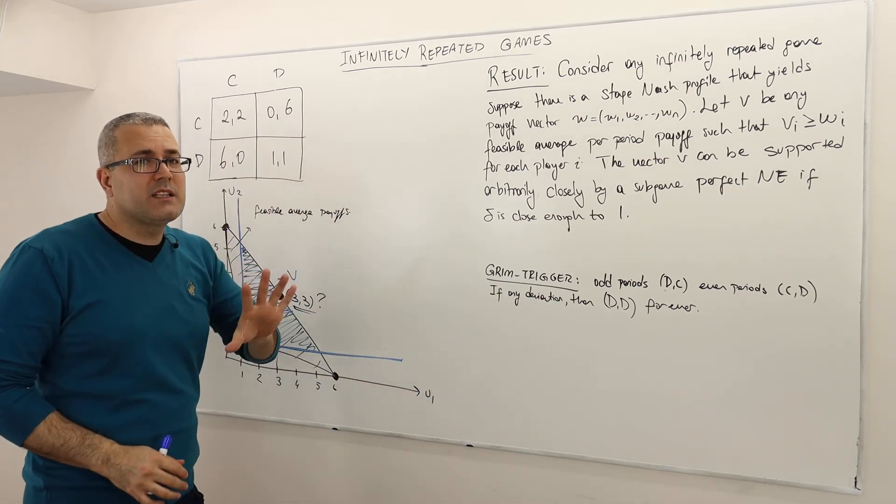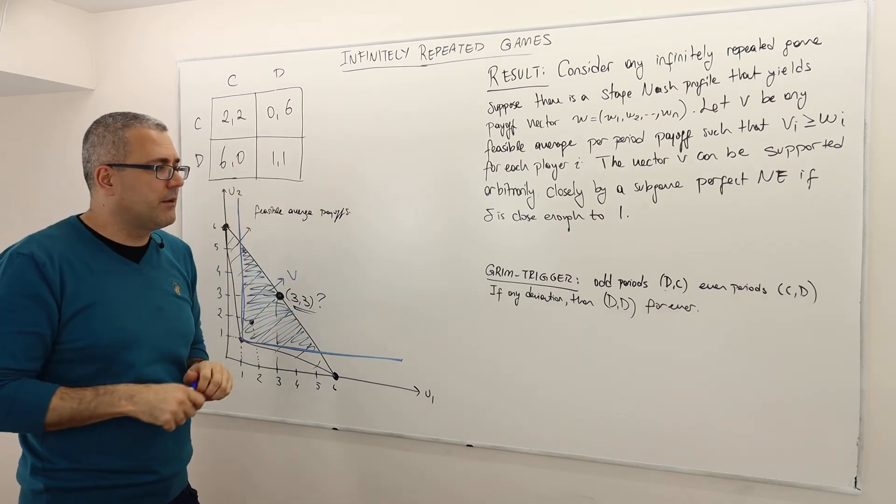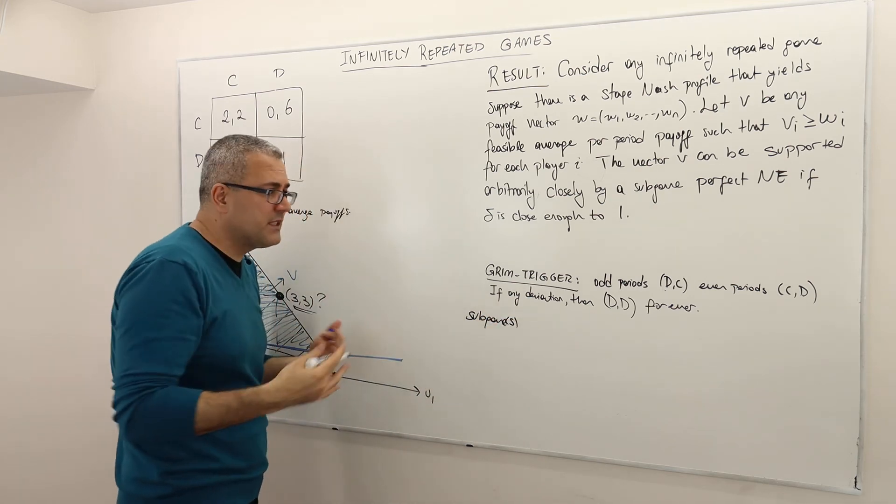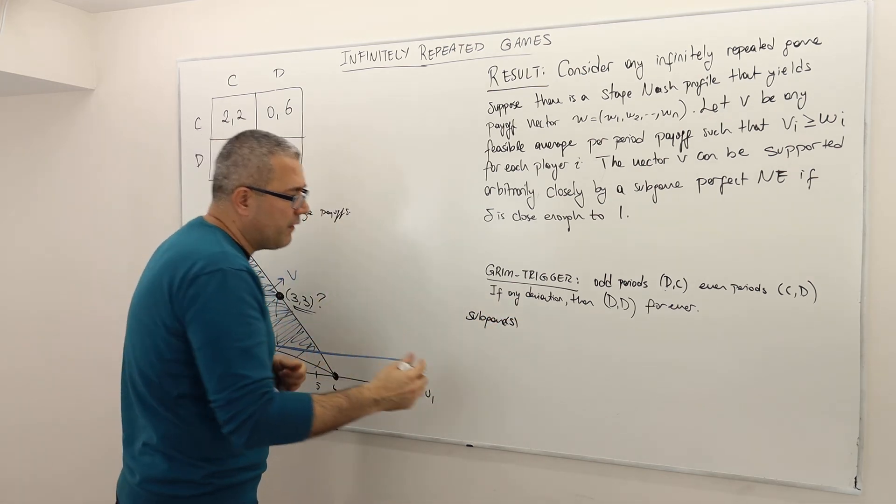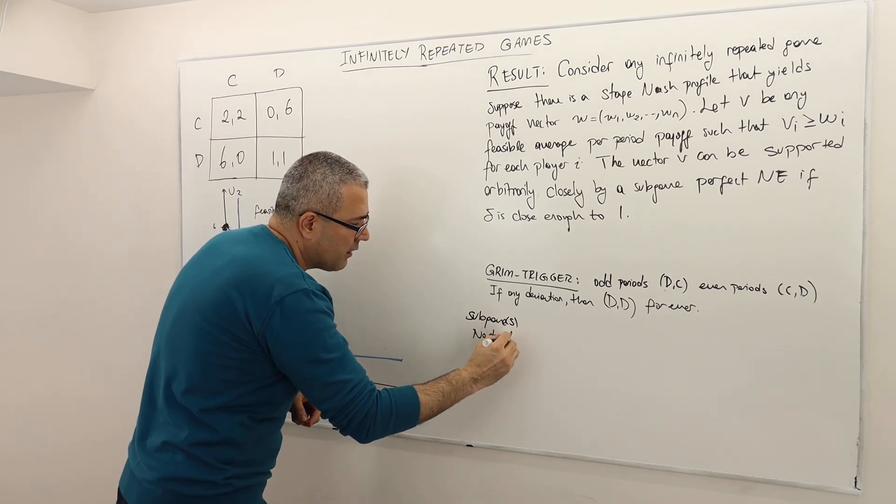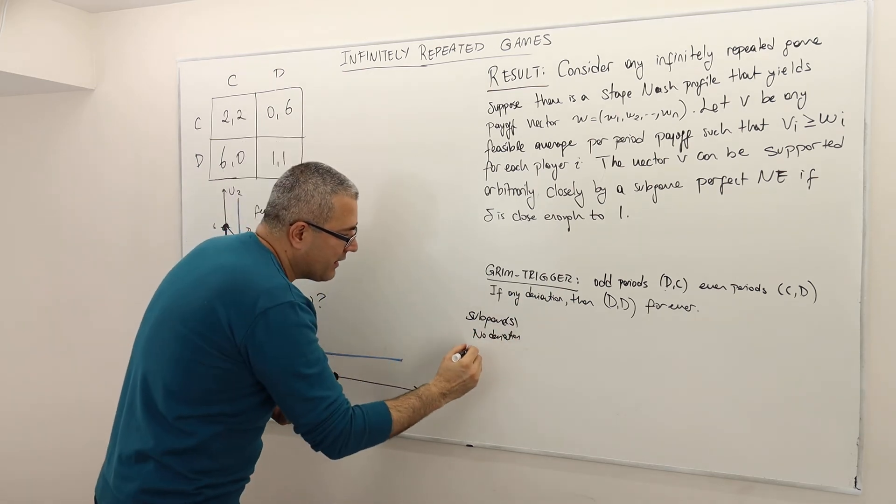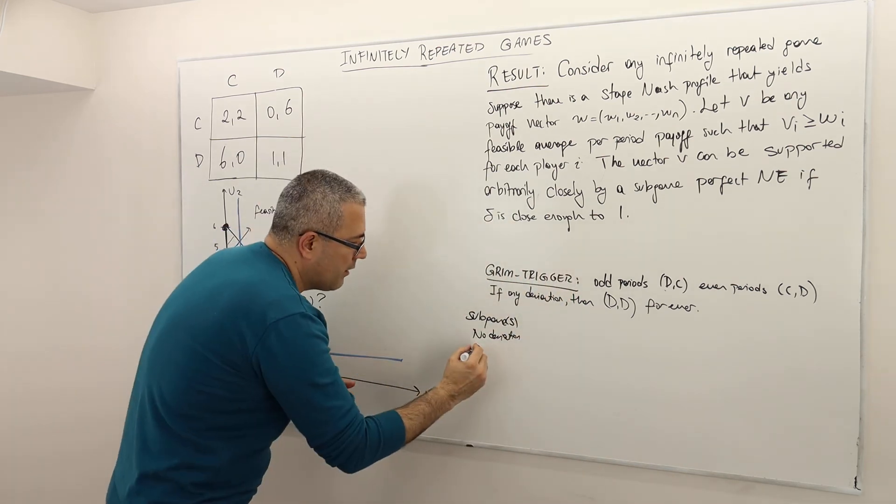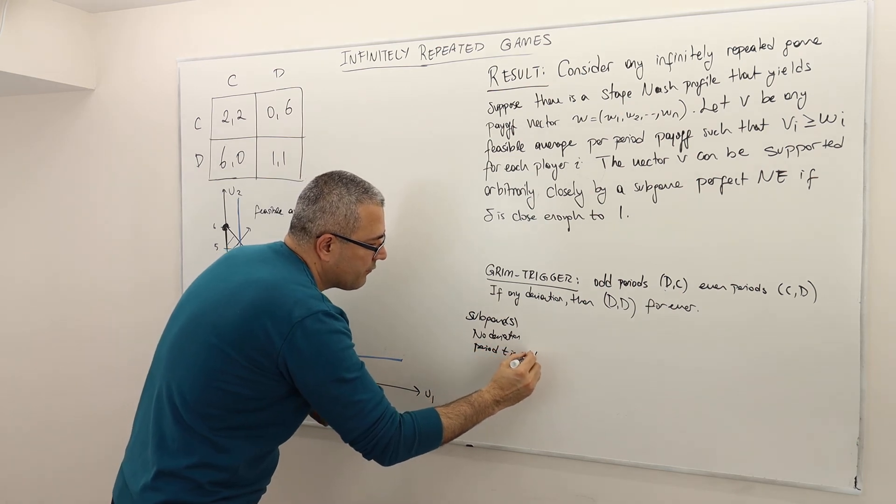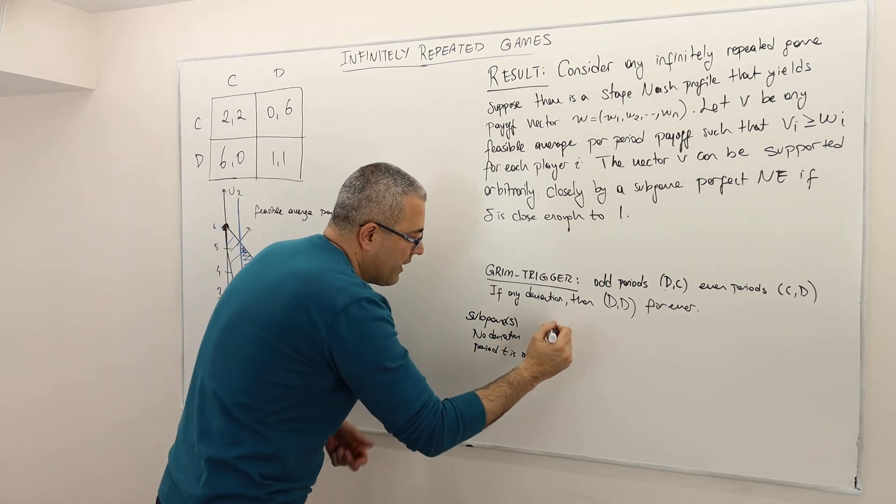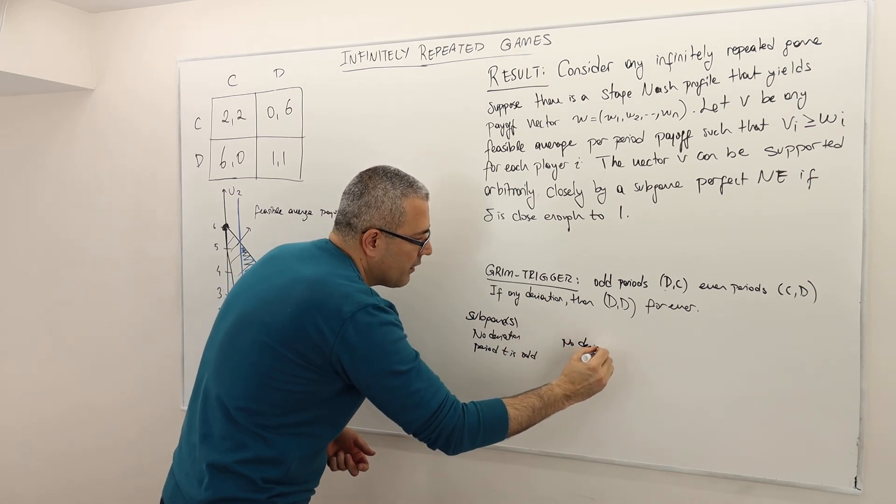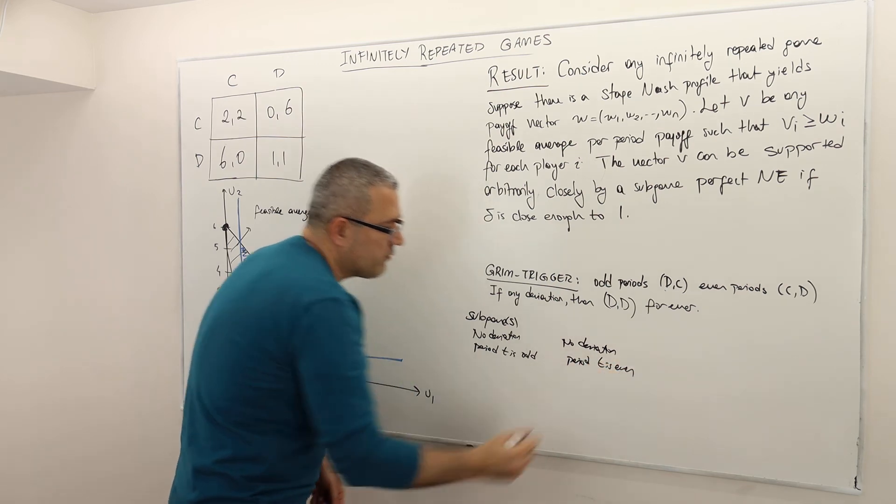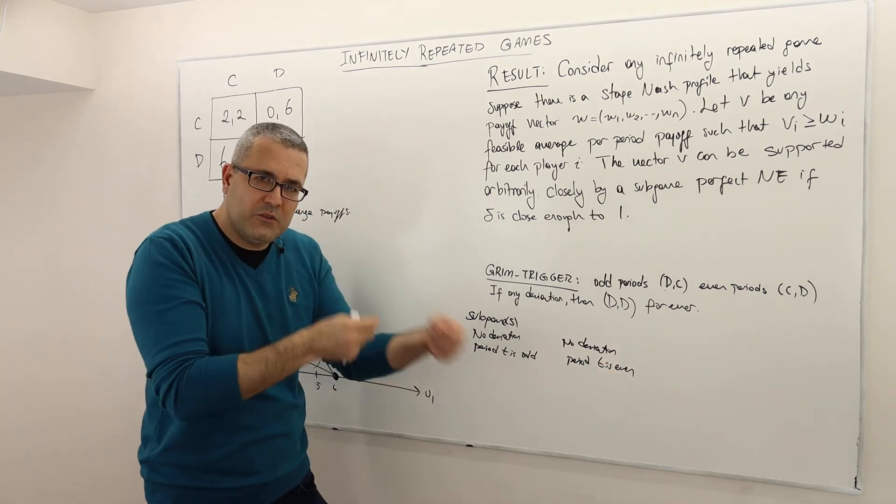So here, there are not just one subgame I need to consider. There are different subgames. Subgames that I should consider are basically the following: No deviation, alright? And it's no deviation and period T is odd, alright? And then another subgame: no deviation and the period T is even, right?